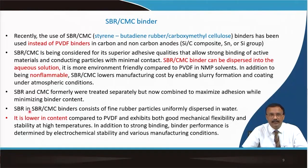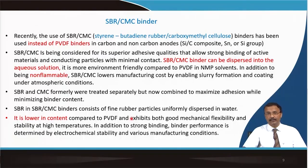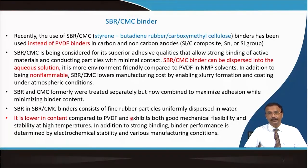SBR/CMC combined binders consist of fine rubber particles uniformly dispersed in water — rubber being an elastomer. A lower content is required compared to PVDF, which improves gravimetric energy density. They exhibit good mechanical flexibility and stability at high temperature. Strong binder performance is also determined by electrochemical stability, which is quite good under various manufacturing conditions.